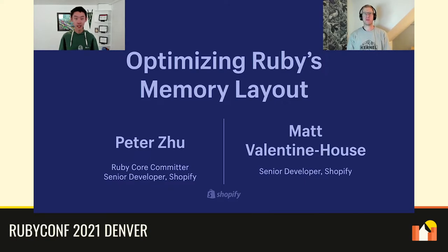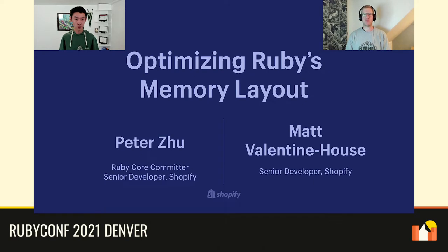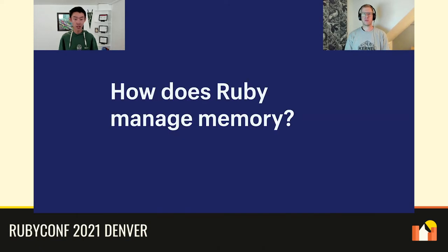Hello RubyConf. I'm Peter, a Ruby core committer and senior developer at Shopify in the Ruby infrastructure team. And I'm Matt, also a senior developer in the Ruby infrastructure team at Shopify. For the past year we've been working together to make some improvements to how memory is laid out in Ruby. In this talk we're going to summarize the work we've done so far, the challenges we've faced, and where we're heading in the future. But before we go into detail, we'll provide some background on how Ruby's garbage collector structures and manages memory.